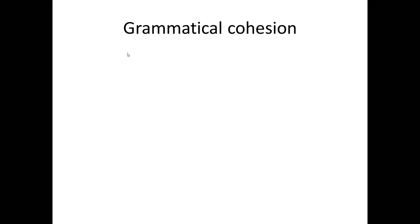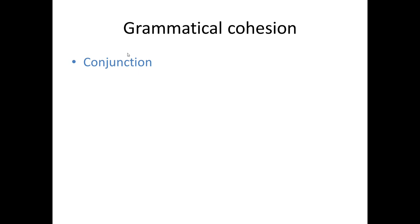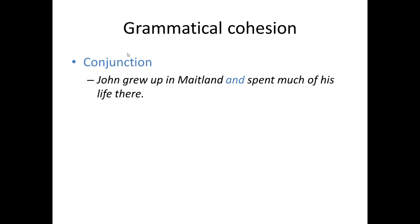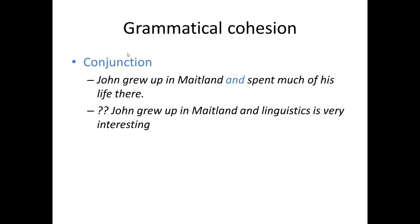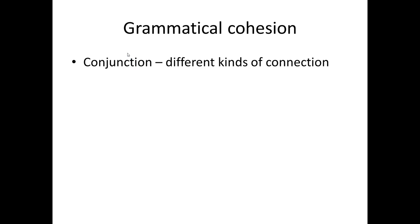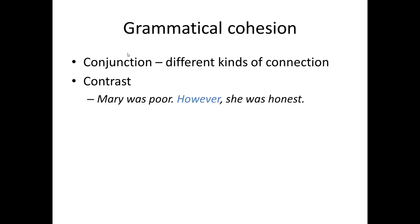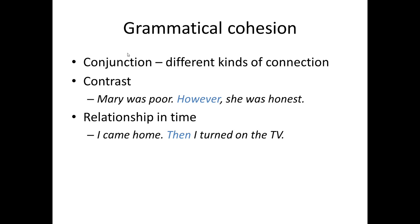Another kind of grammatical cohesion is called conjunction. Conjunctions are used to connect sentences or parts of sentences to indicate some sort of relation between them. Consider: 'John grew up in Maitland and spent much of his life there.' Here 'and' connects the two clauses, indicating that the information in the second clause is relevant to the first. We can use conjunctions and related words to indicate different kinds of connections between clauses. 'However' indicates a contrast: 'Mary was poor, however she was honest.' 'Then' indicates a relationship in time: 'I came home, then I turned on the TV', indicating that the second event occurred after the first.